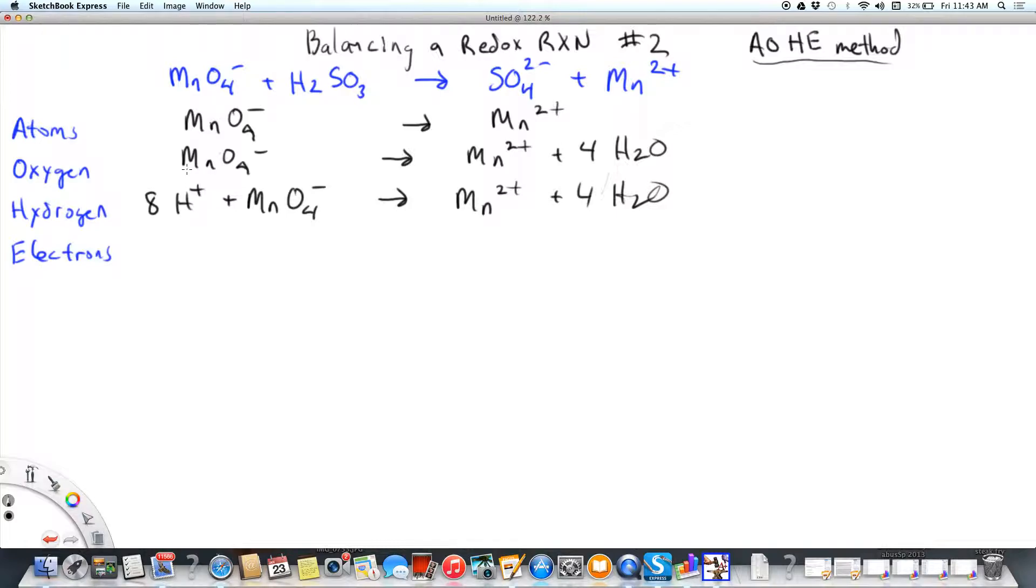The charge has to be balanced. So if you look over here I've got eight pluses and one minus. So that's seven positives on the left and two positives on the right. So I've got to balance that. I've got to make this side, the left, more negative. So I have to add five electrons and then we'll be balanced with respect to charge and everything else.